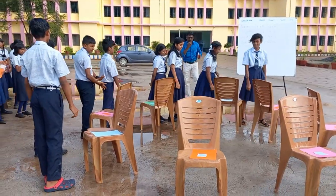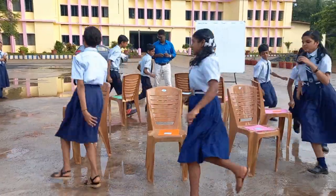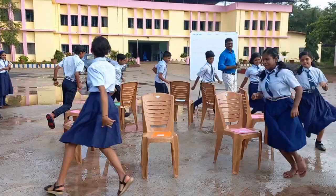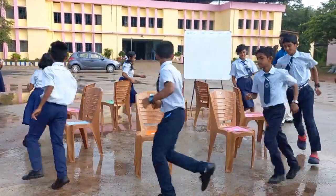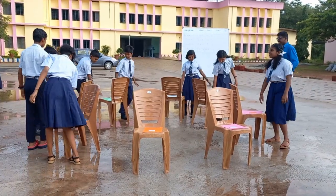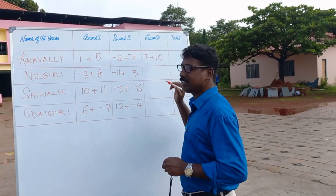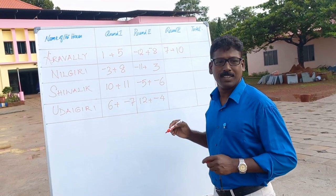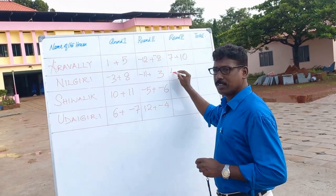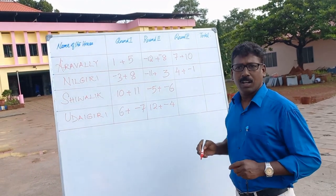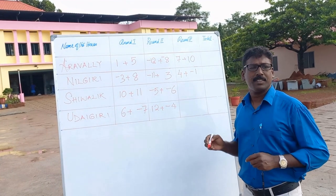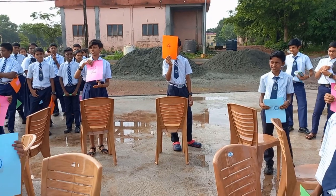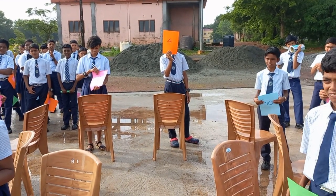Stop. Come on. Neelagiri: four, negative. Shivalik: negative three, negative three, negative four.